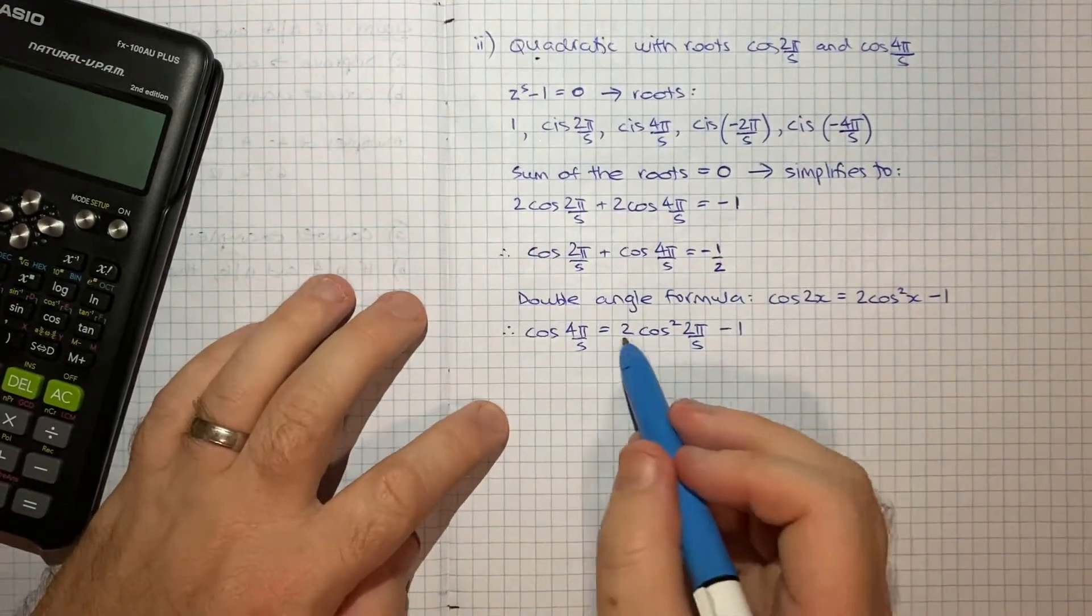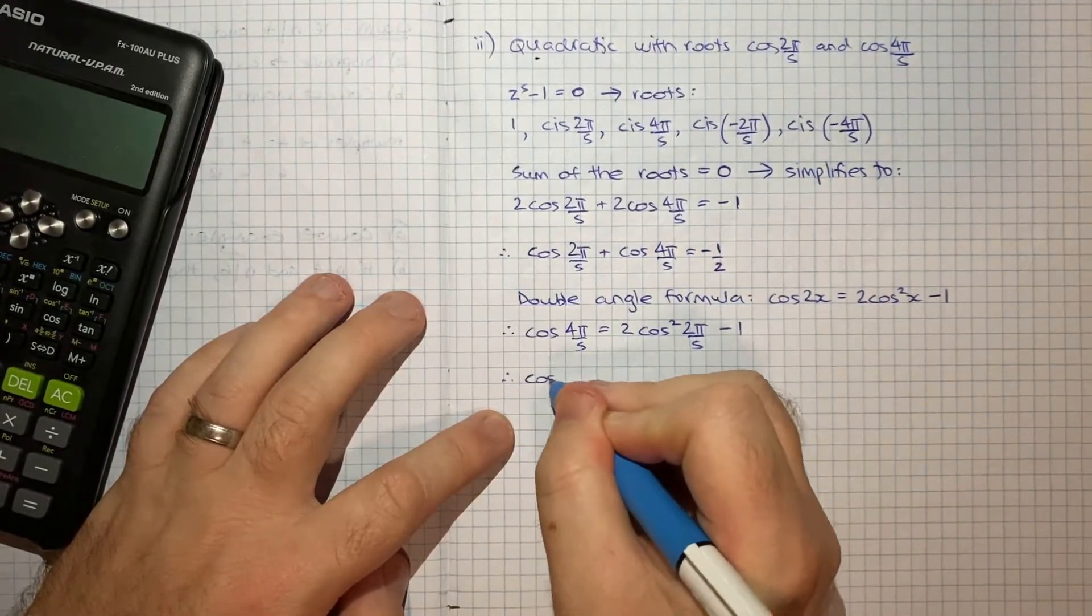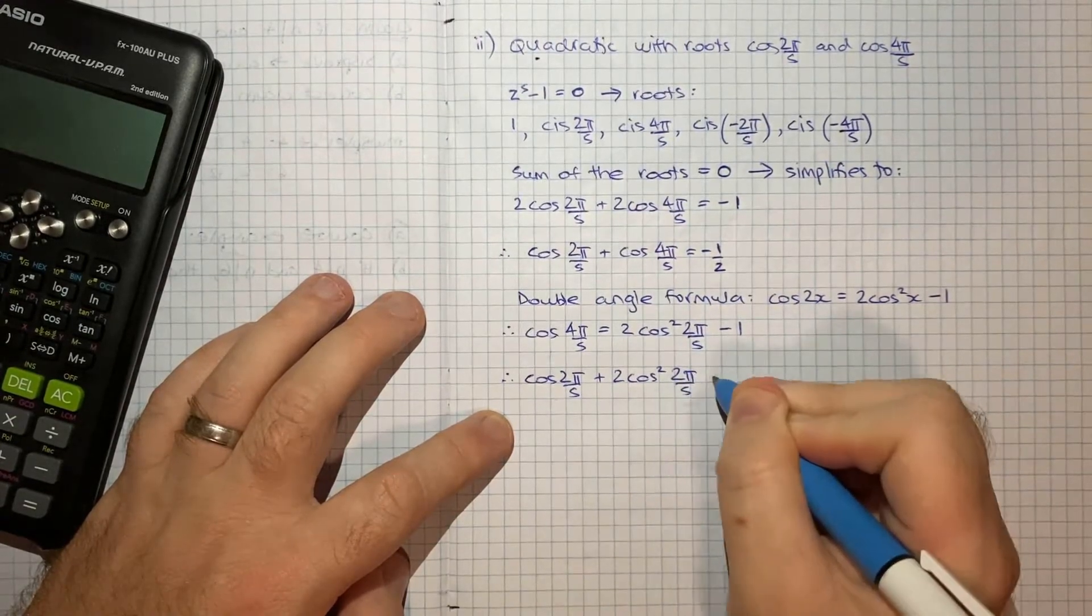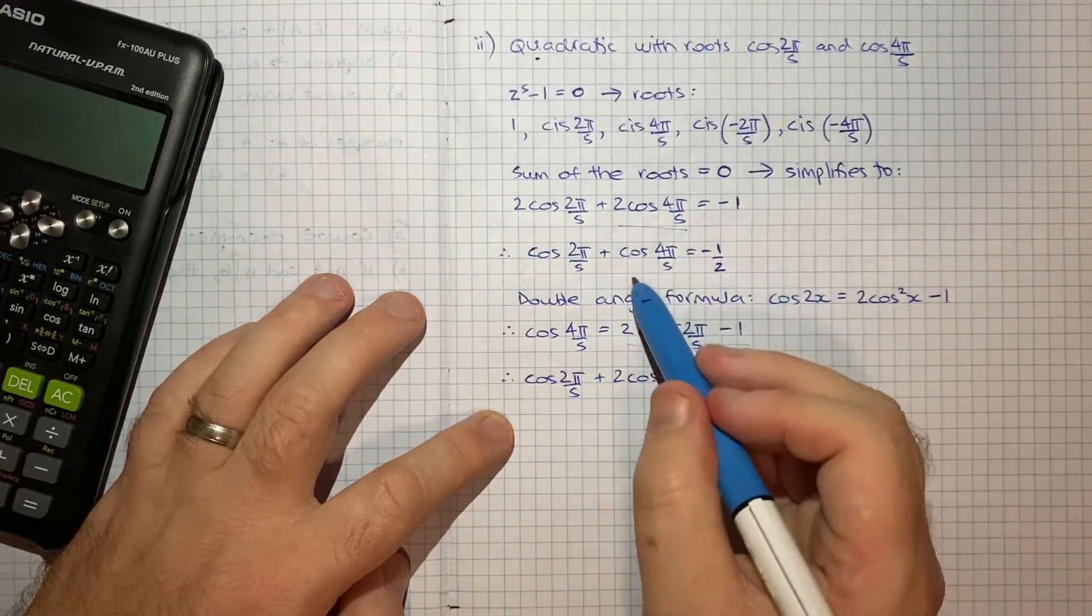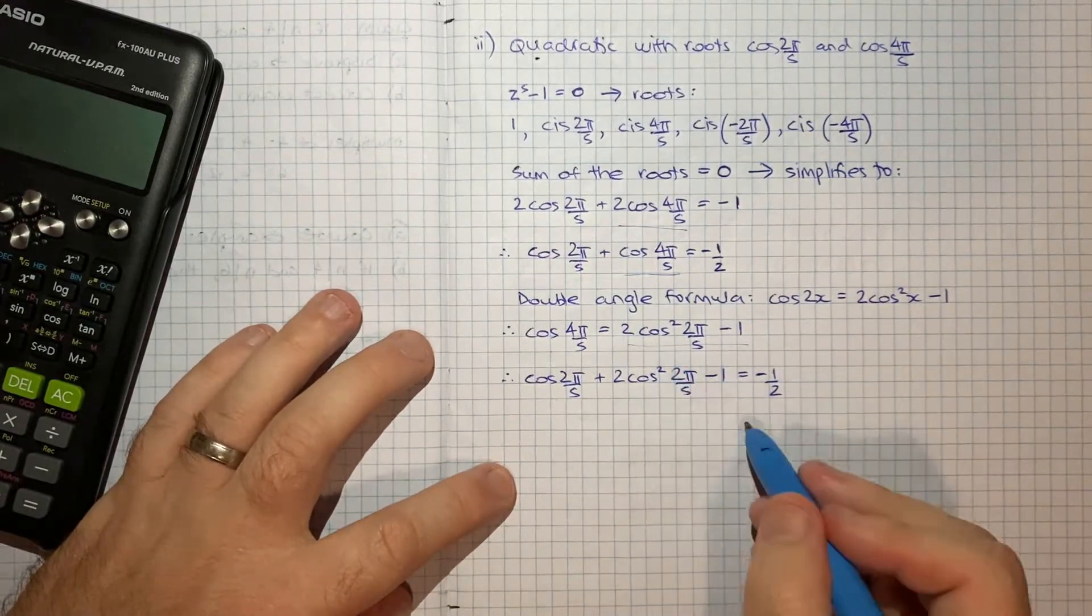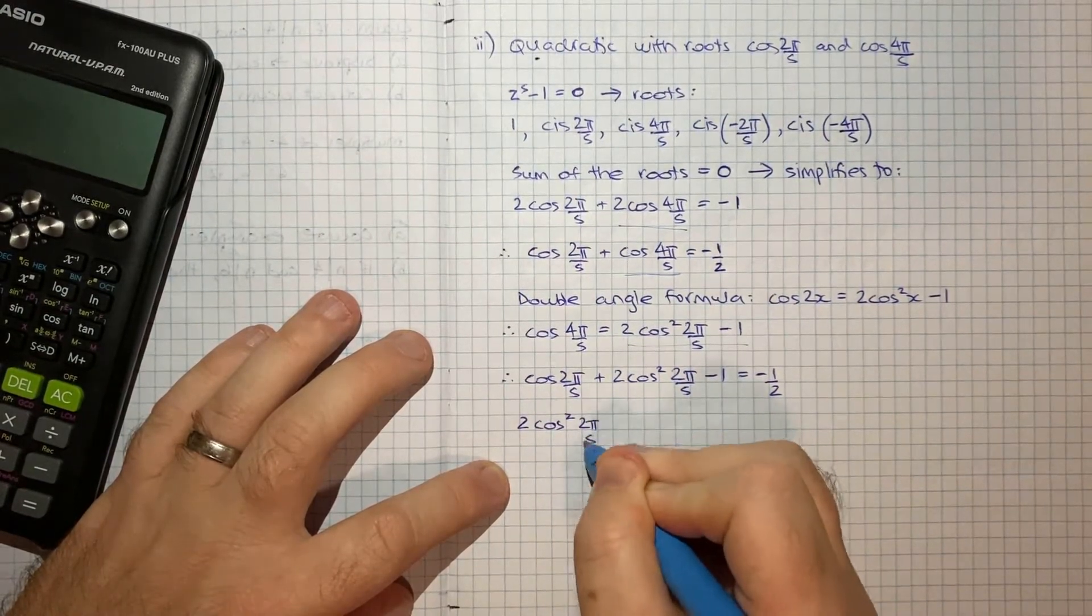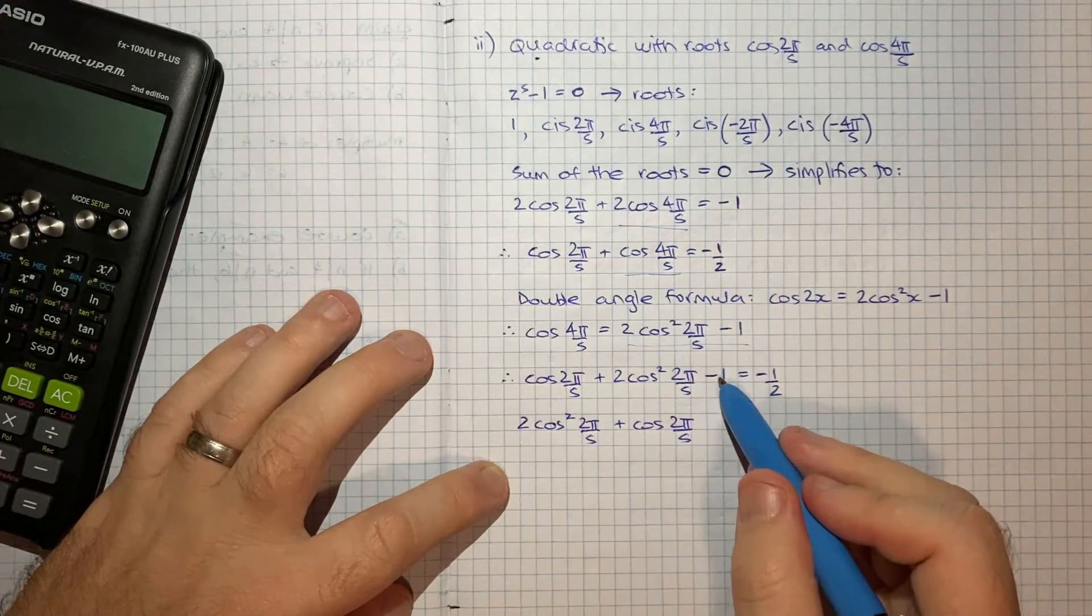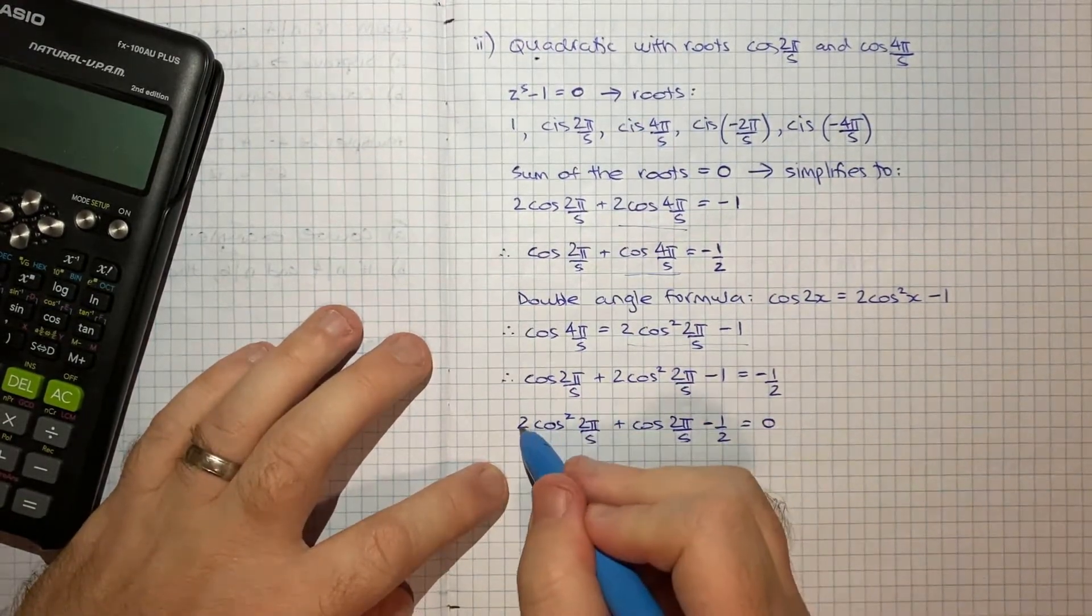This is really going to help us get from 4π/5 into something squared. So we can say cos of 4π/5 is the same as 2 cos squared 2π/5 minus 1. So what I'll do is insert this into our result here. Therefore we can say cos 2π/5 plus 2 cos squared 2π/5 minus 1 equals negative 1 half. So I'll put my power of 2 out as the first item: 2 cos squared 2π/5 plus cos 2π/5 minus 1 half equals 0.